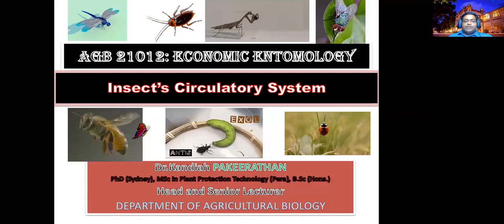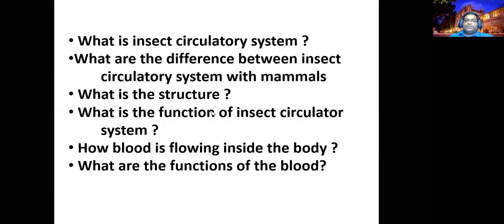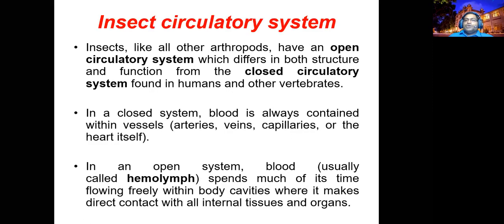Good morning, dear students. This is an economic entomology class — the seventh class of this section. Today we are going to discuss the insect circulatory system. We will study what the insect circulatory system is, its specific structures and functions, how blood is circulated throughout the insect body, and the functions of the blood or hemolymph.